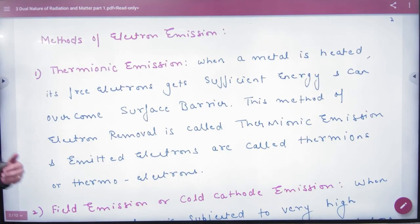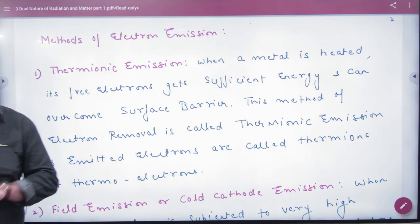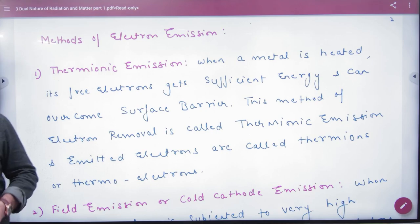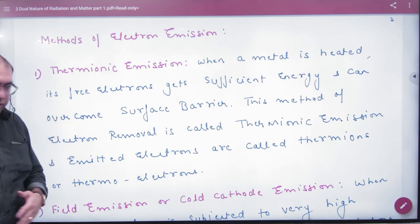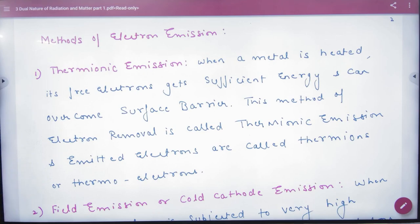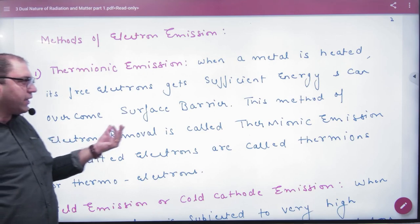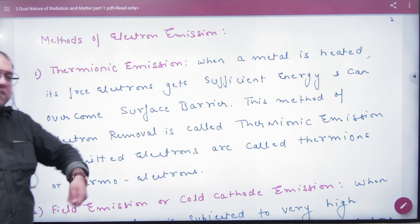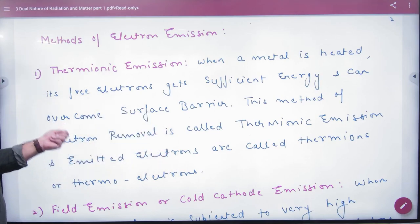Next is method of electron emission. It is not like photoelectric is the only effect. Many scientists have worked and emitted electrons in many different ways. The first method is thermionic emission. Electrons are provided thermal energy, or heat. With that energy, they provide so much energy that they come out from the metal surface. They call it thermionic emission.